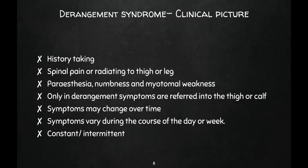Clinical picture is established mainly through history taking, asking specific questions. By history taking we can determine if the patient has derangement spinal pain or radiating pain to the thigh or leg. In derangement, the patient may present with localized spinal pain, or they may have radiating pain to the thigh or leg. Paresthesia, numbness, and myotomal weakness will be seen only in derangement, as symptoms are referred into the thigh or calf.